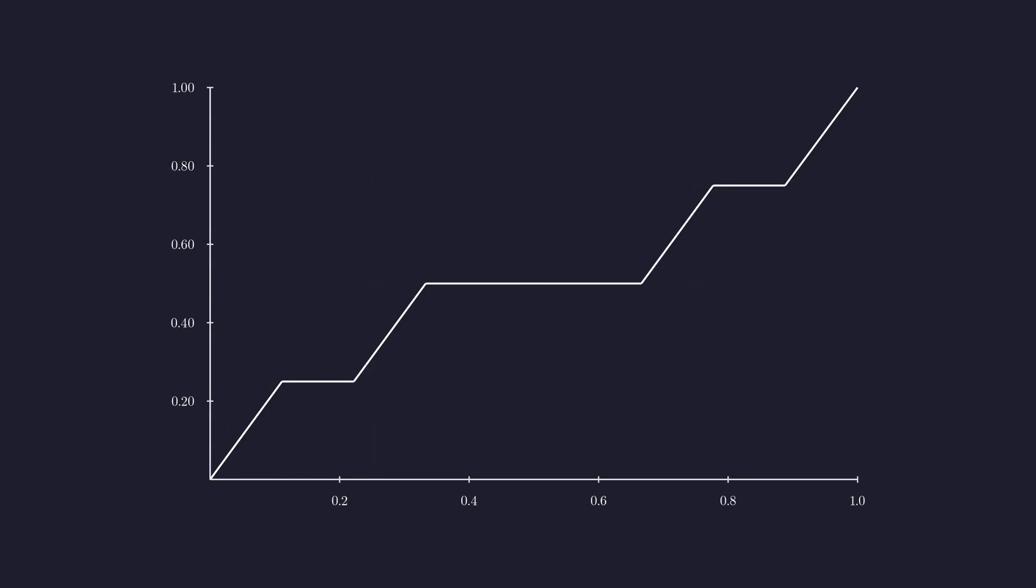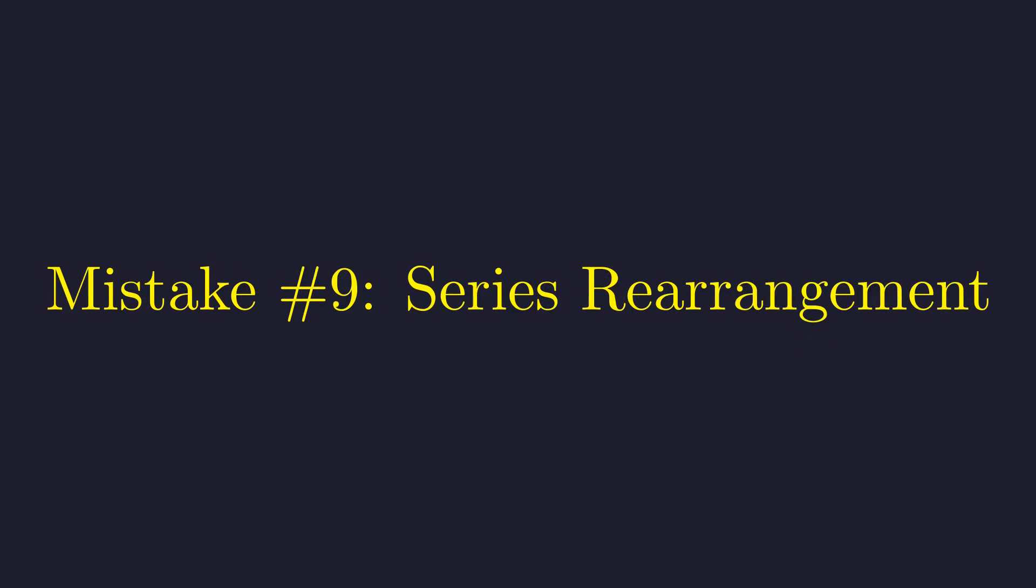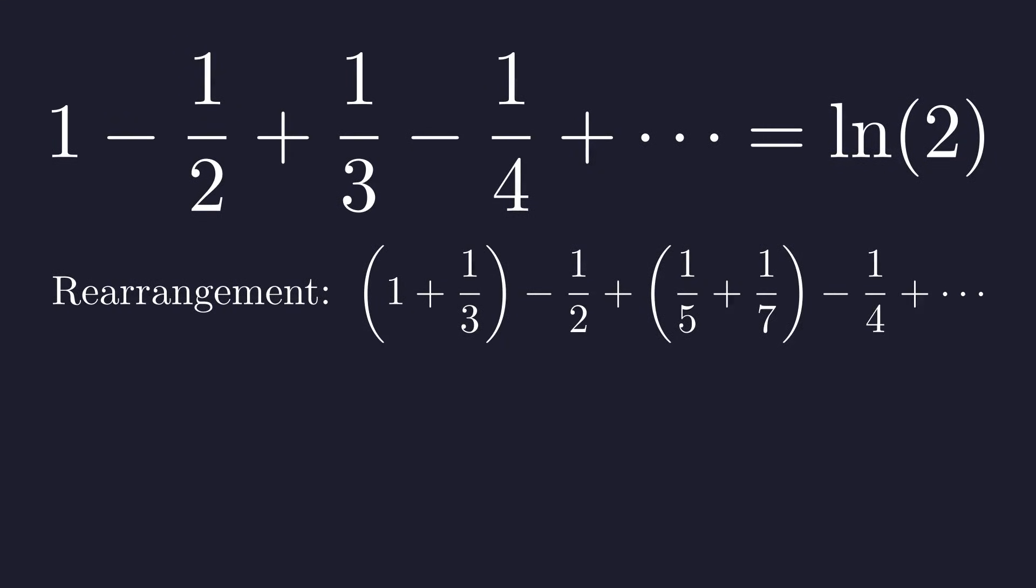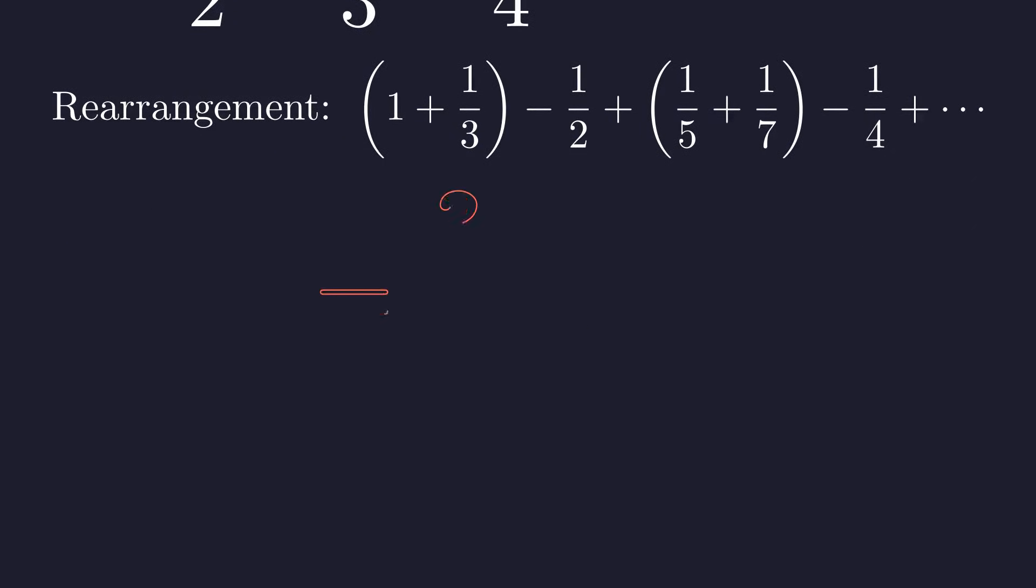With a finite number of terms, addition is commutative, but in the infinite realm this property can vanish. The alternating harmonic series is a famous result. It converges to the natural logarithm of two. But what if we rearrange the terms using a pattern of two positive terms followed by one negative term? This rearranged series converges to a completely different value. Same numbers, different order, different sum.